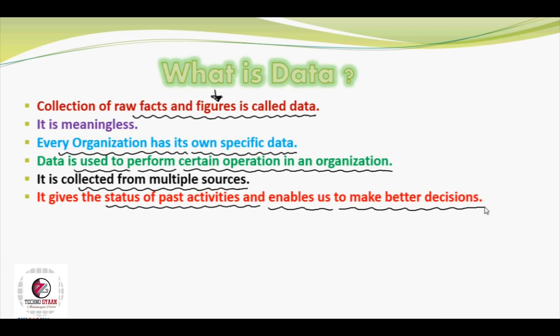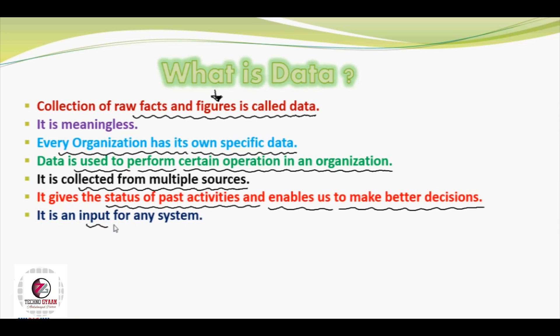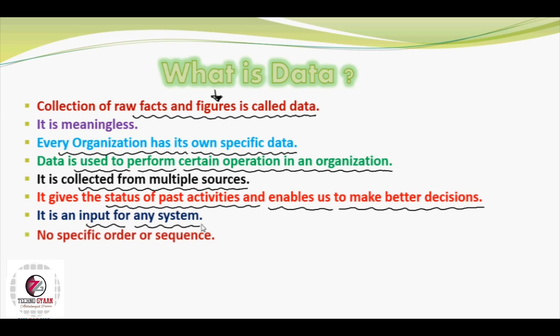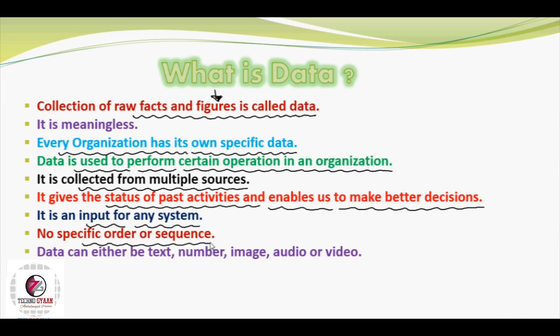This data gives the status of past activities and enables us to make better decisions, because data represents some past activity. Like if a student gives an exam, the numbers in the result — until we perform some processing on them — are treated as data. This data represents that the student had attempted the paper. This data becomes input for any system, and our computer system converts this data input into information output. This data does not have any specific sequence or order because it is meaningless, so we do not prefer any sequence or order in it.